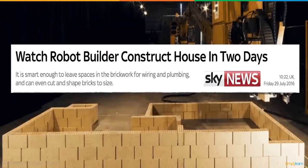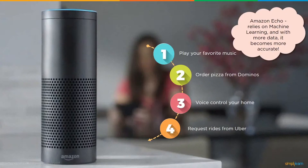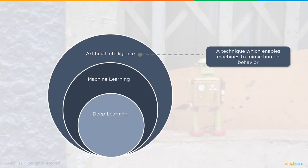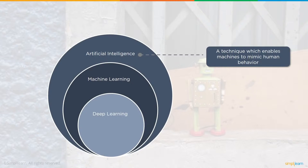A robot builder can construct a house in two days, smart enough to leave spaces in brickwork for wiring and plumbing and even cut and shape bricks. Amazon Echo relies on machine learning — with more data it becomes more accurate, enabling you to play music, order pizza, voice control your home, and request Uber rides. Artificial intelligence is a technique enabling machines to mimic human behavior — it's the big picture encompassing everything.